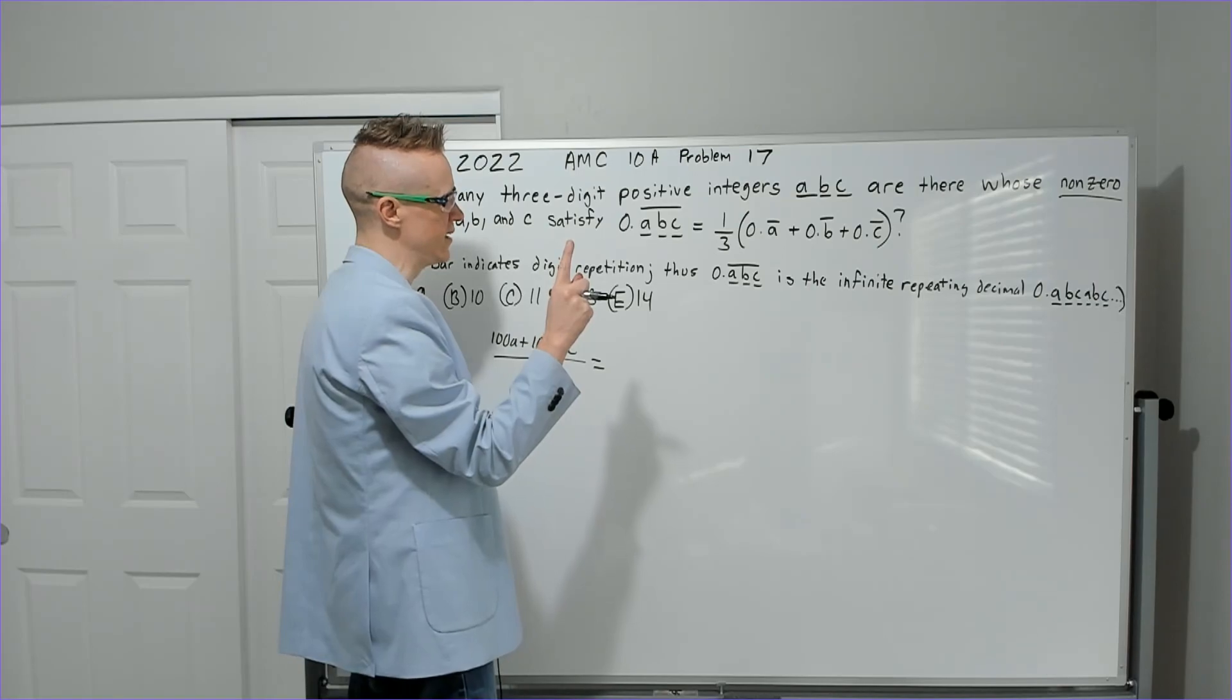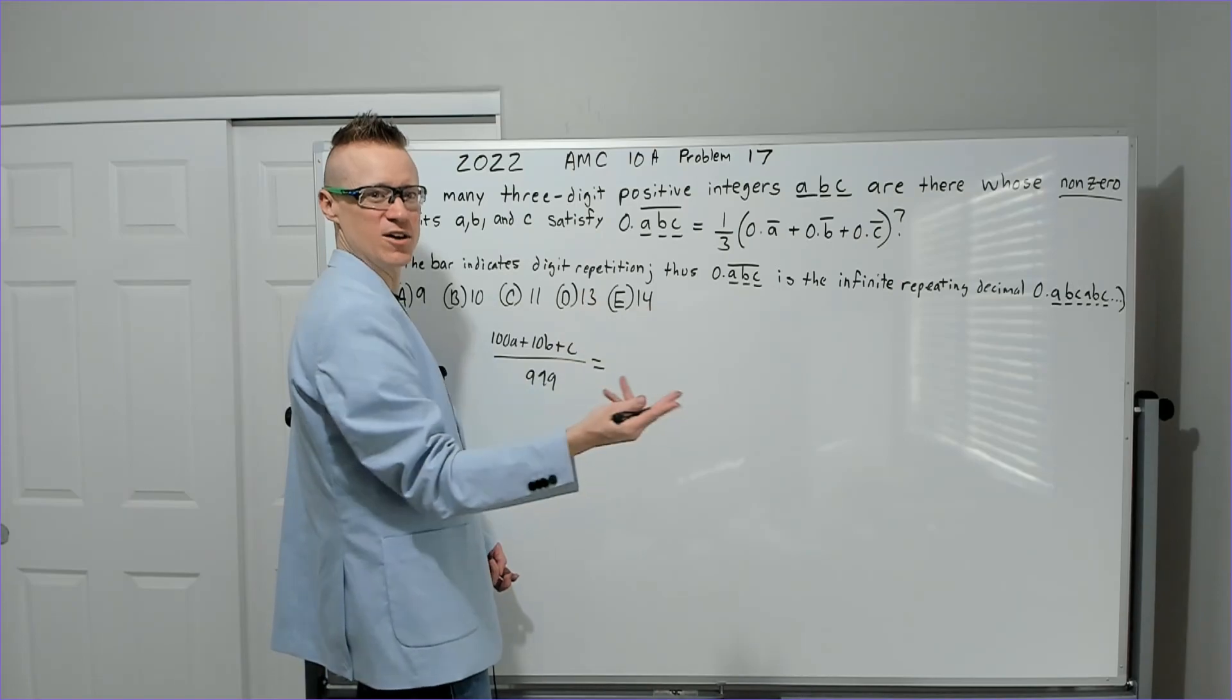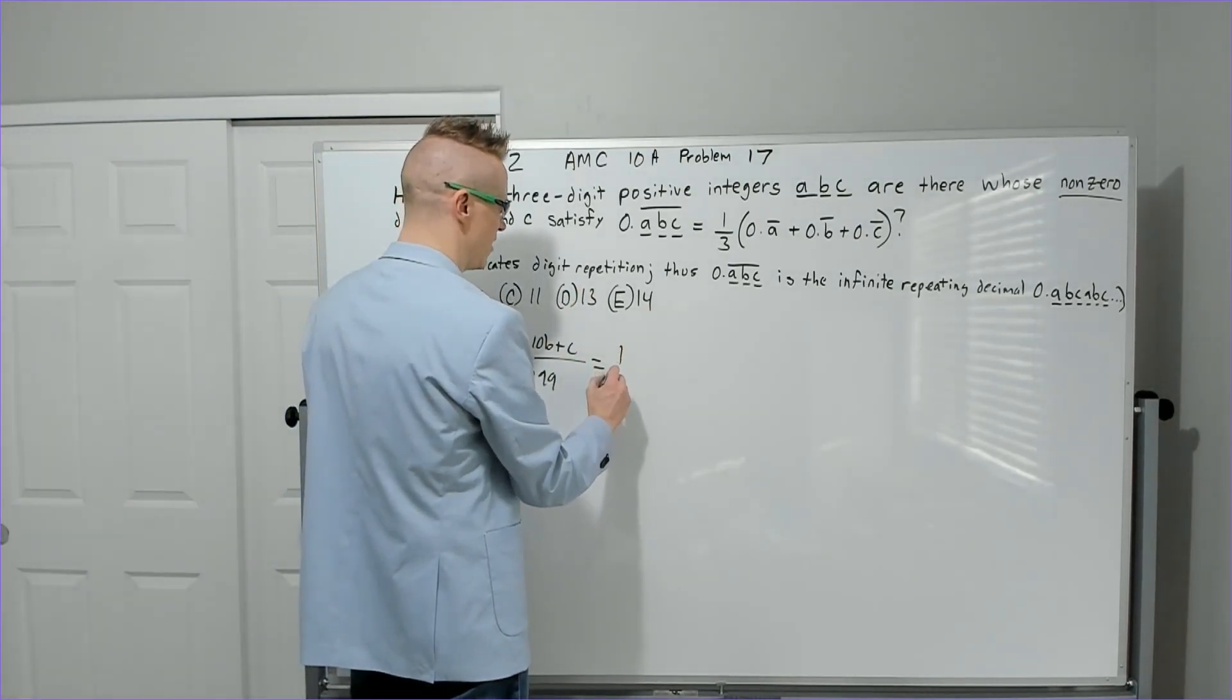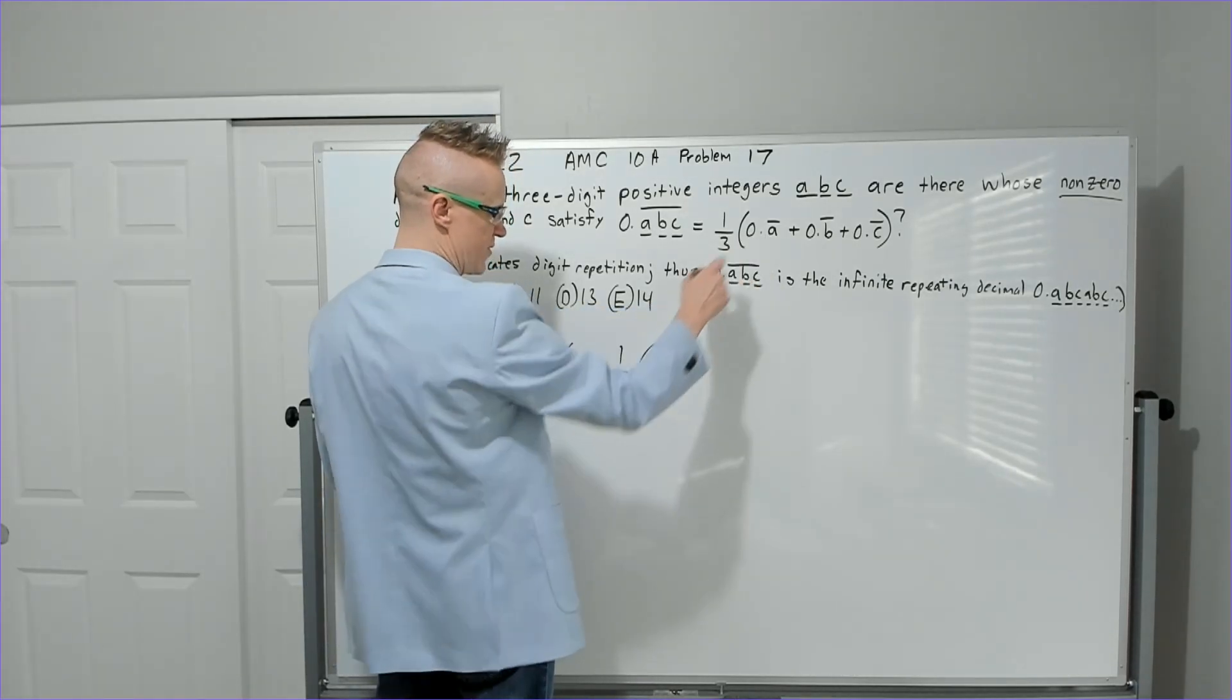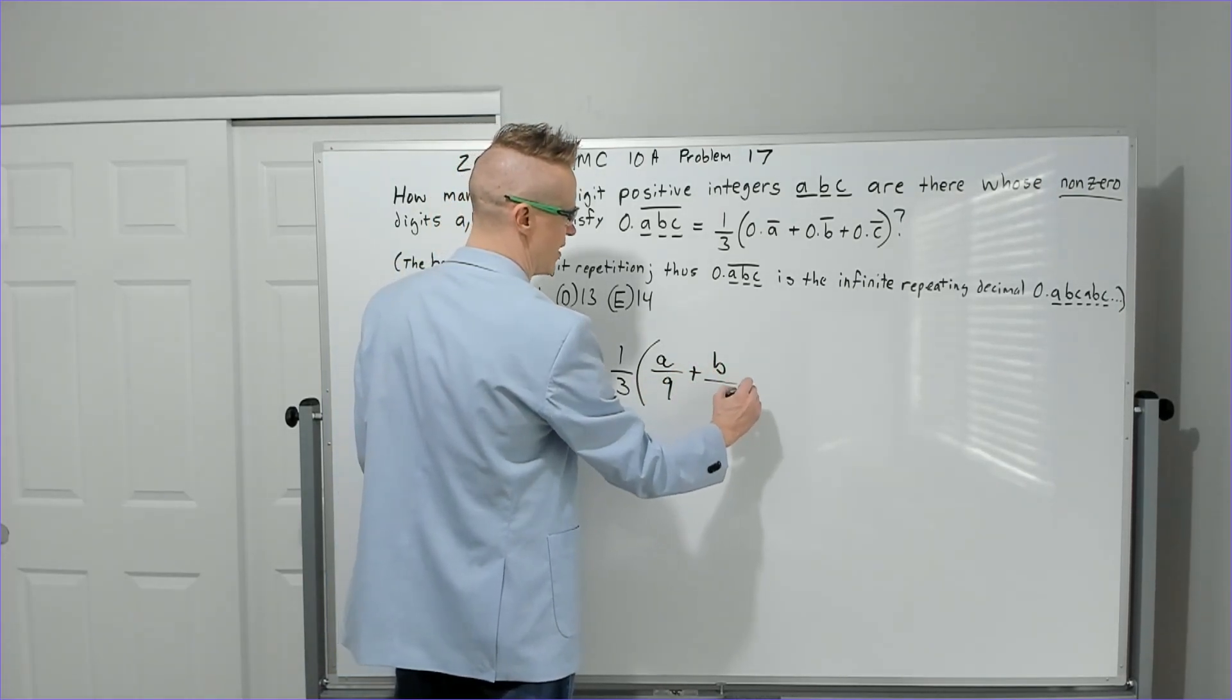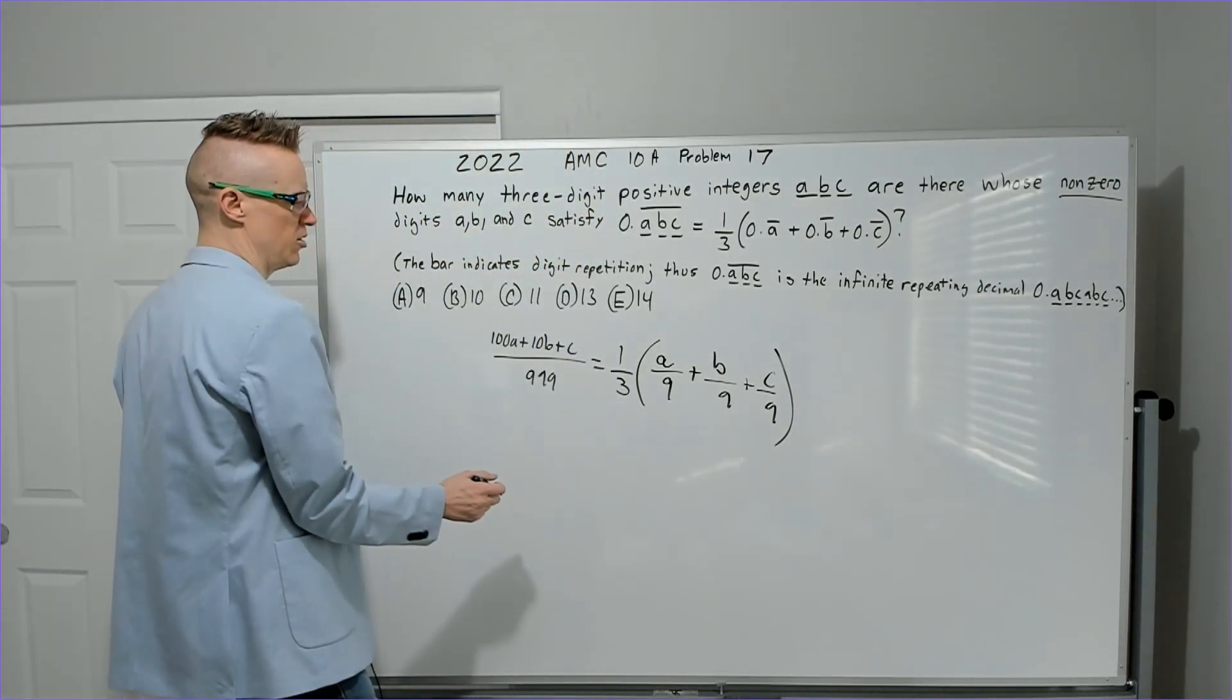You should know the shortcuts for these: if you have one repeated digit afterwards, it's that digit over 9; if you have two, it's those digits over 99; three over 999, and so on. So you're going to have equals one-third, and then again the same thing here: A over 9 plus B over 9 plus C over 9.